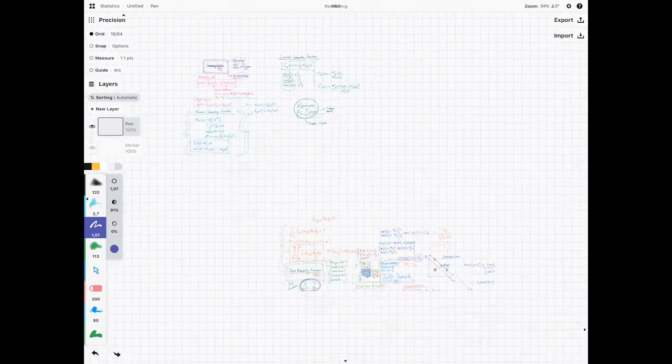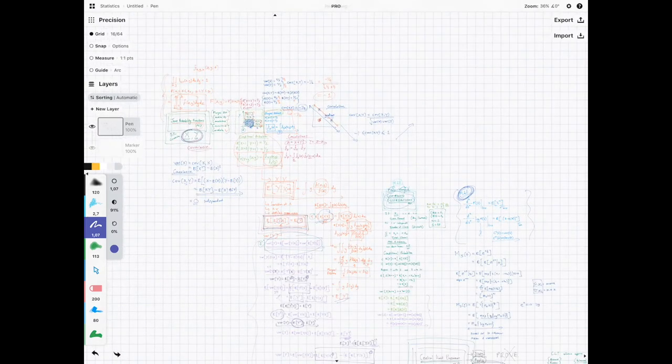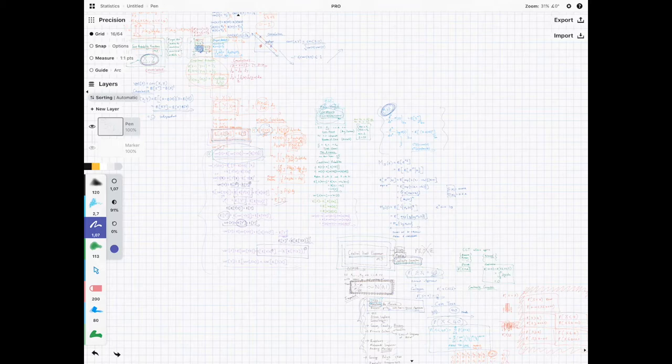joint probability distributions, generating functions, compound distributions, and even the central limit theorem. So this might be chapter nine,